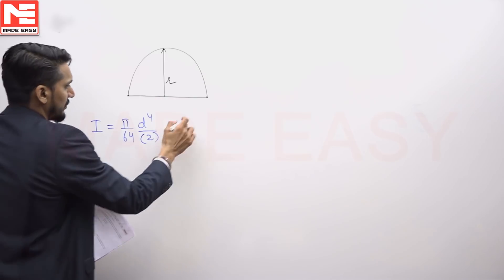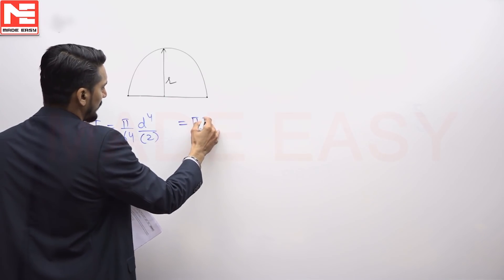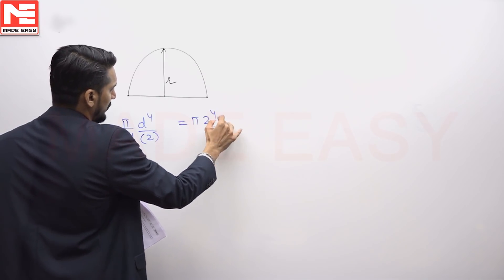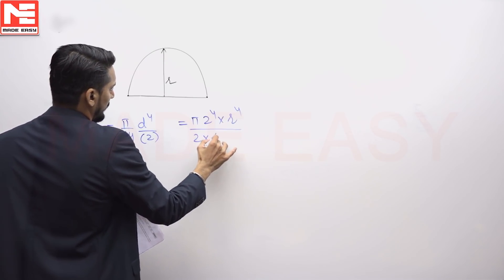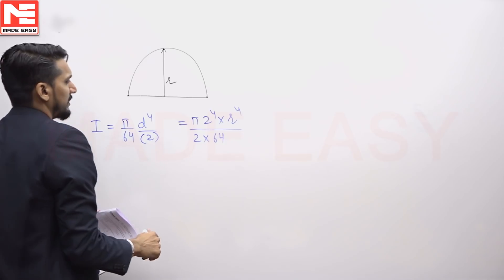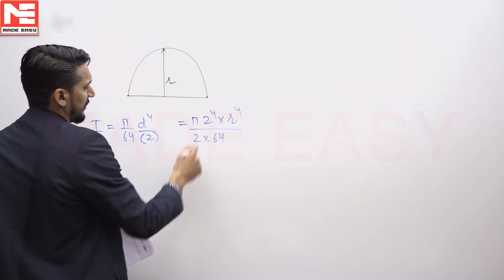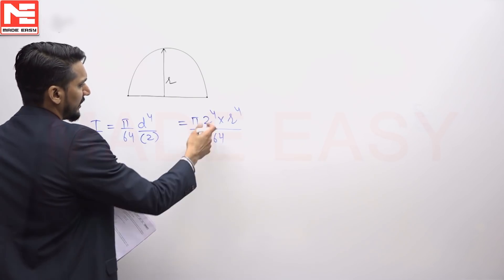it is given because R is given to us, so d is nothing but twice of R. That is (2R)⁴ divided by 2 times 64, so it is going to come out to 2 raised to power 3, that is 8.